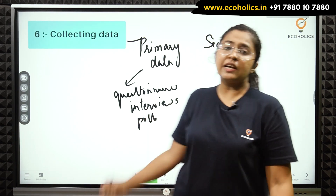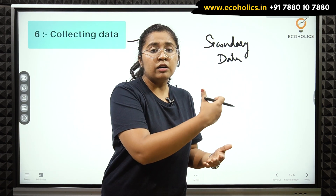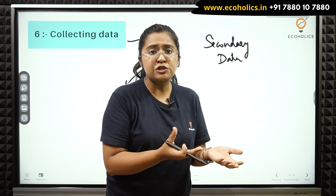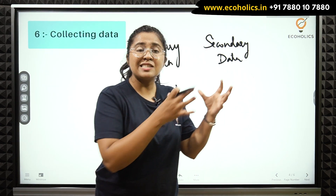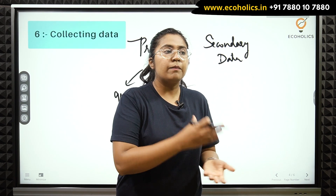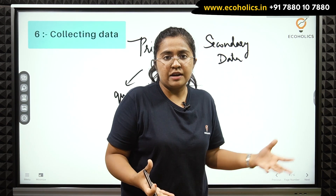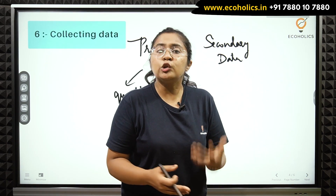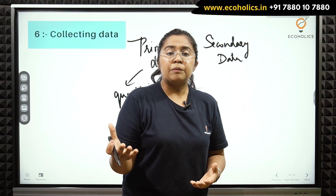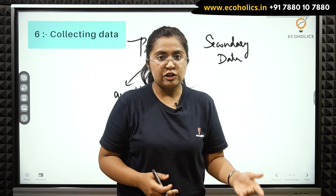There is also secondary data, which is equally important and can be equally authentic if it has already been collected through authentic and genuine sources. For example, information researched by authentic portals or journals, collected by newspapers, government officials, government organizations, or private organizations — that data is also suitable for research. It is most often stated that primary data combined with secondary data will definitely give the research an edge and effectiveness.